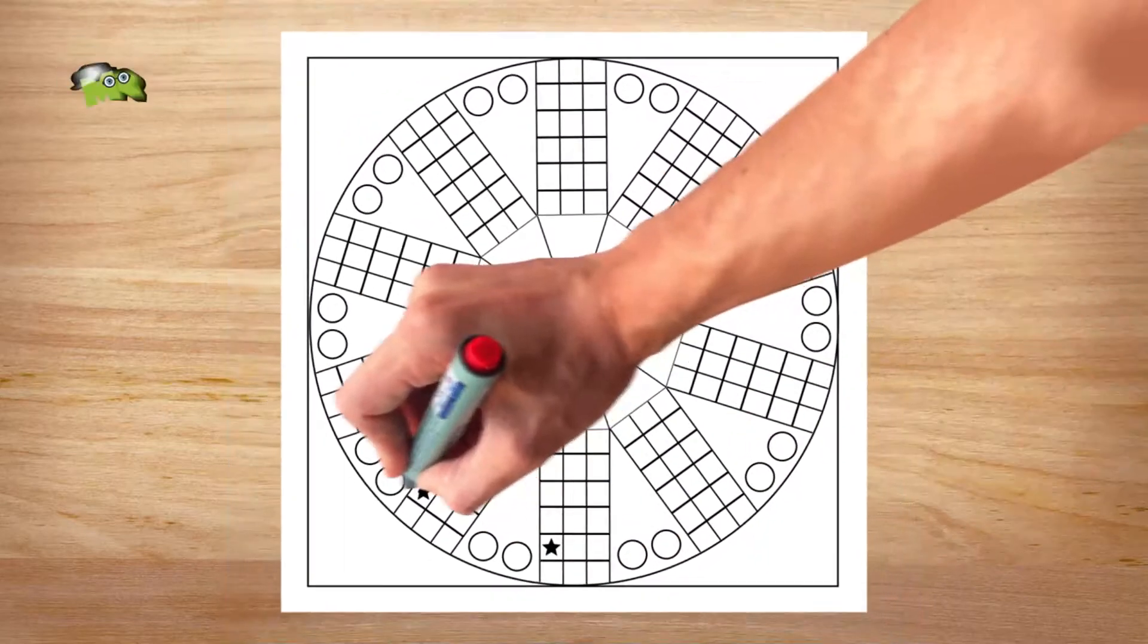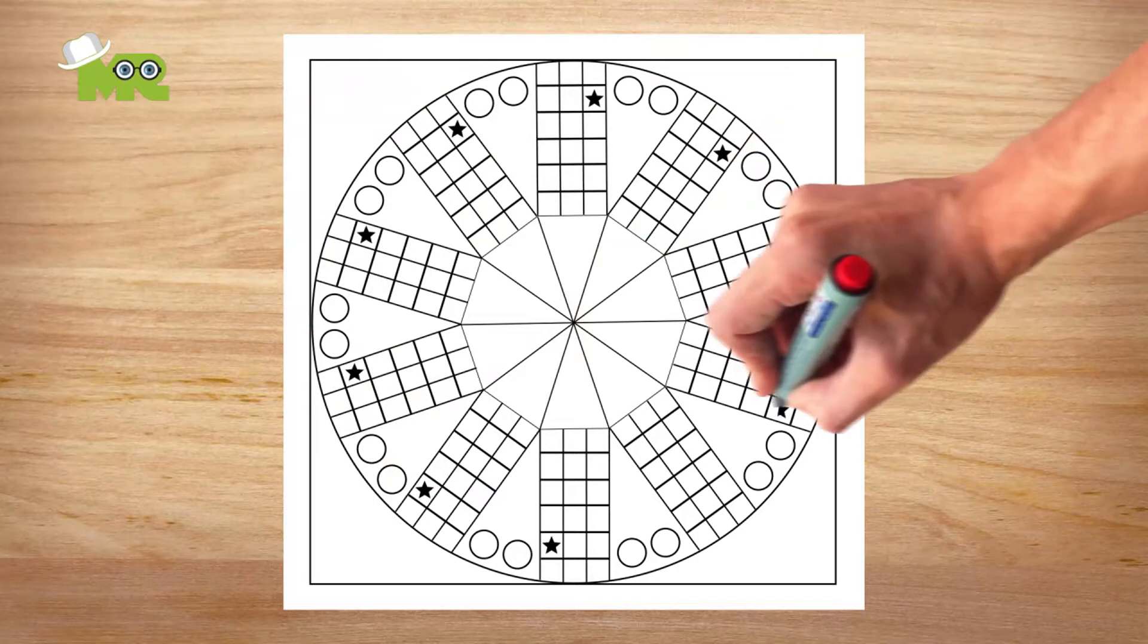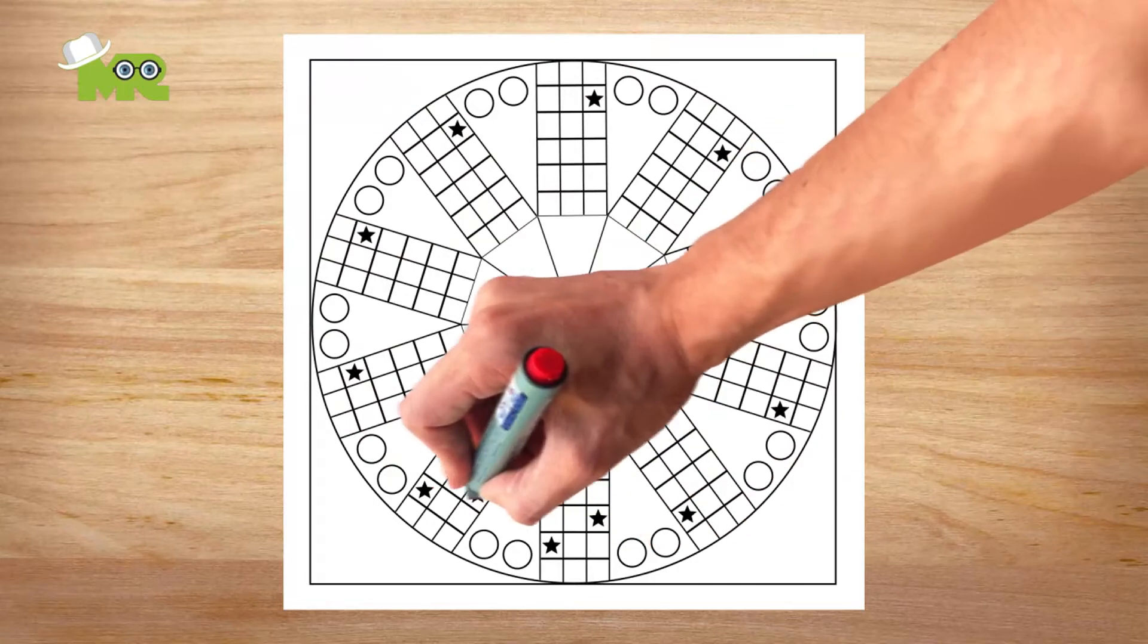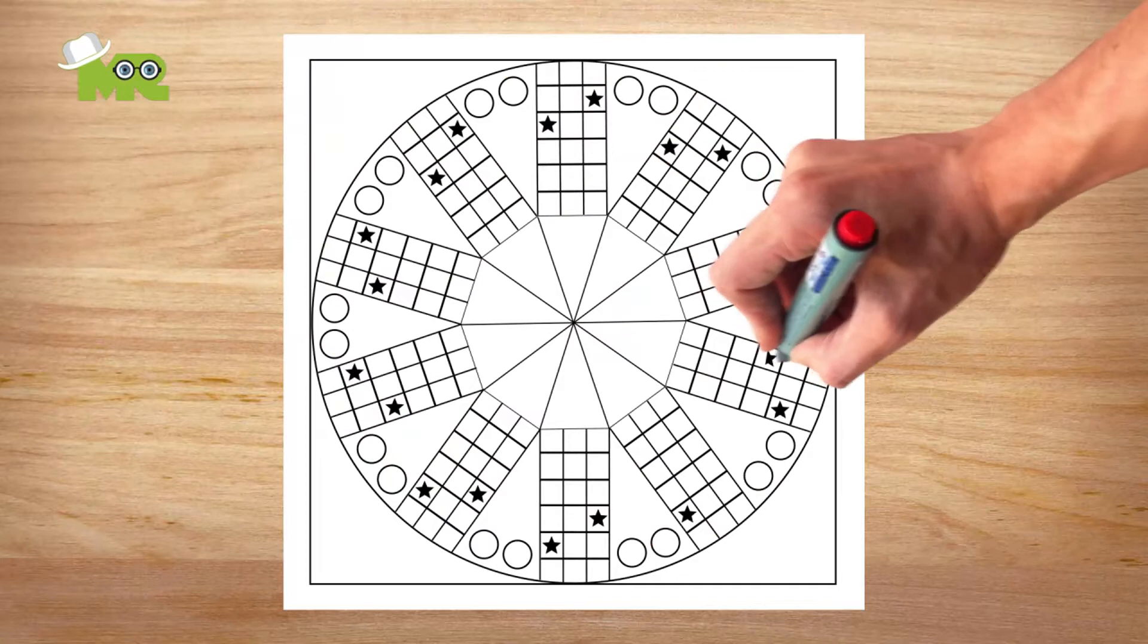Make a star on all 10 starting squares. Now let's make stars on all of the 10 safety squares.